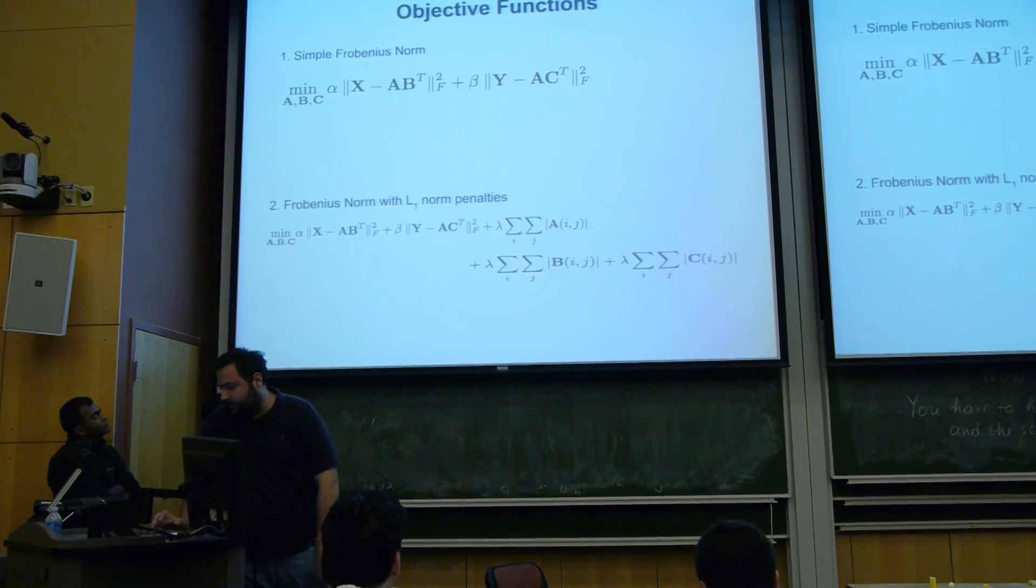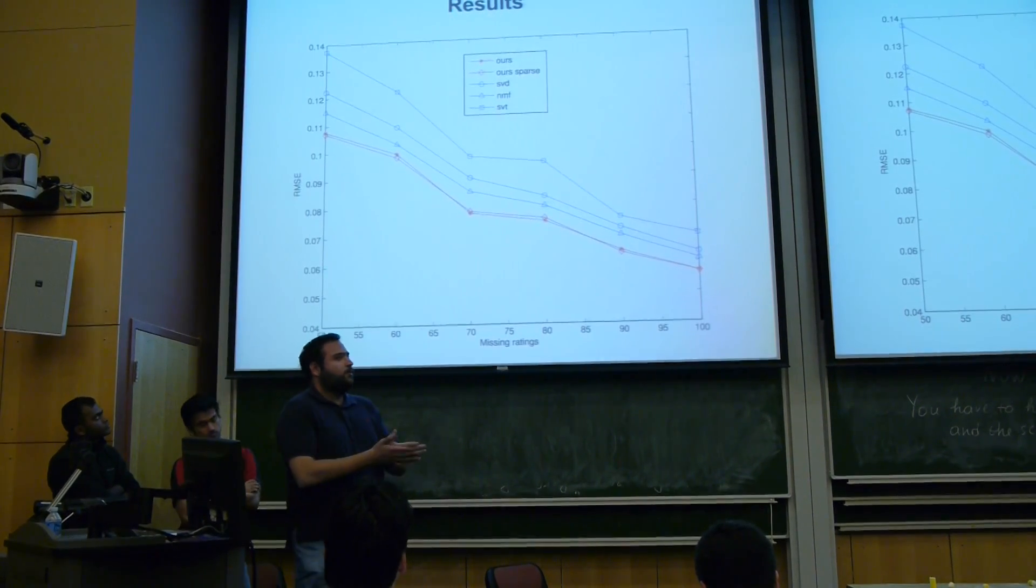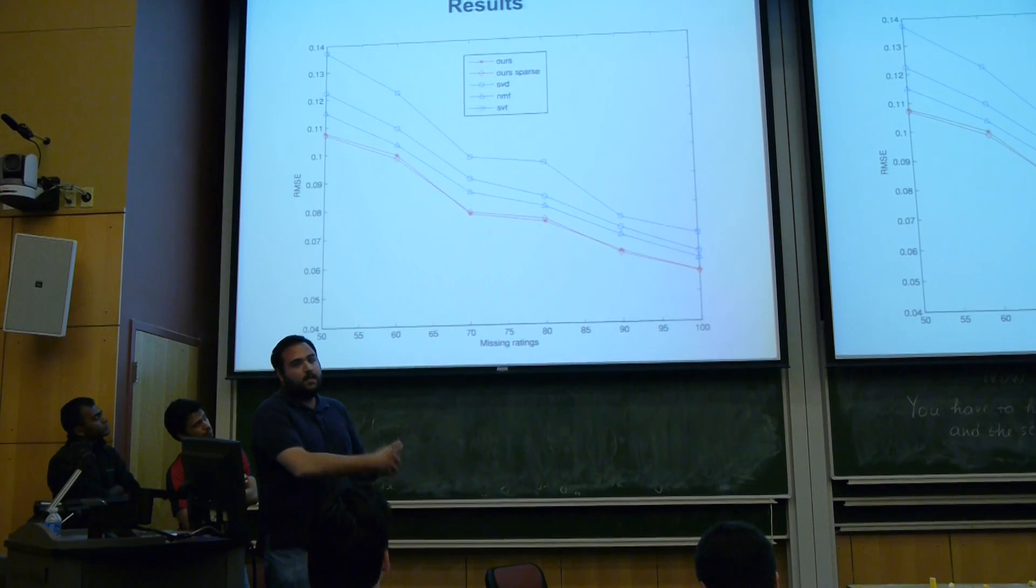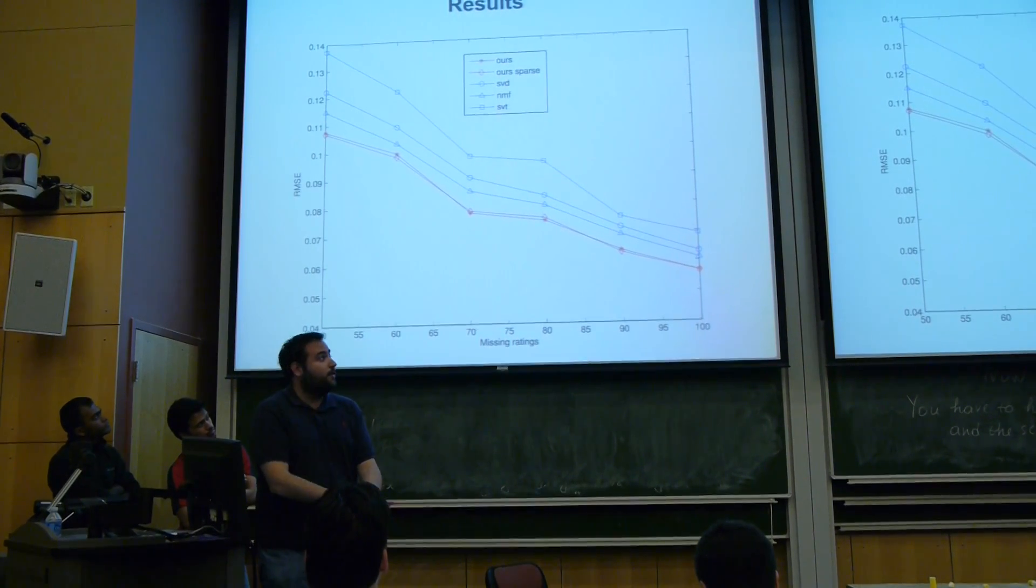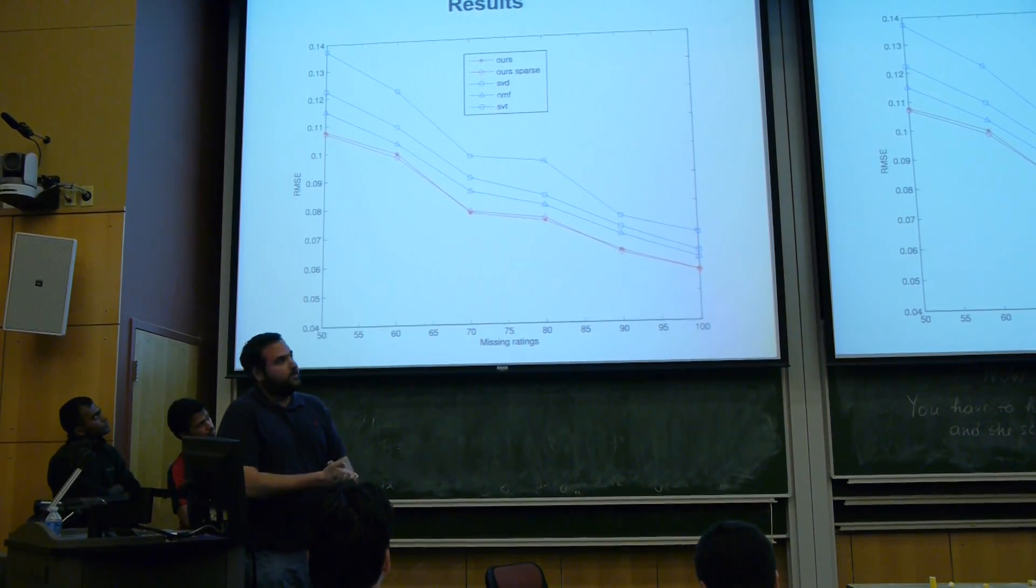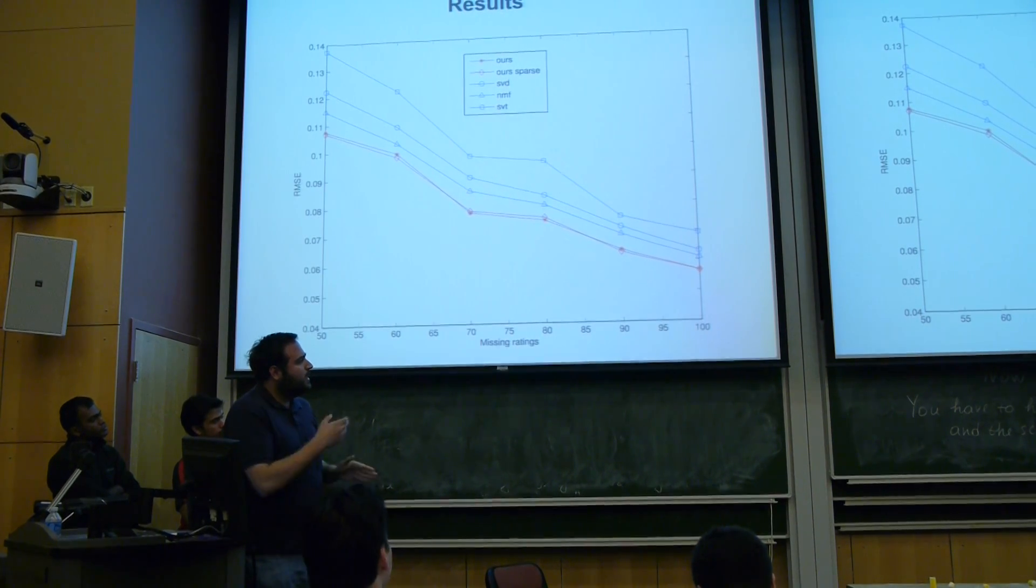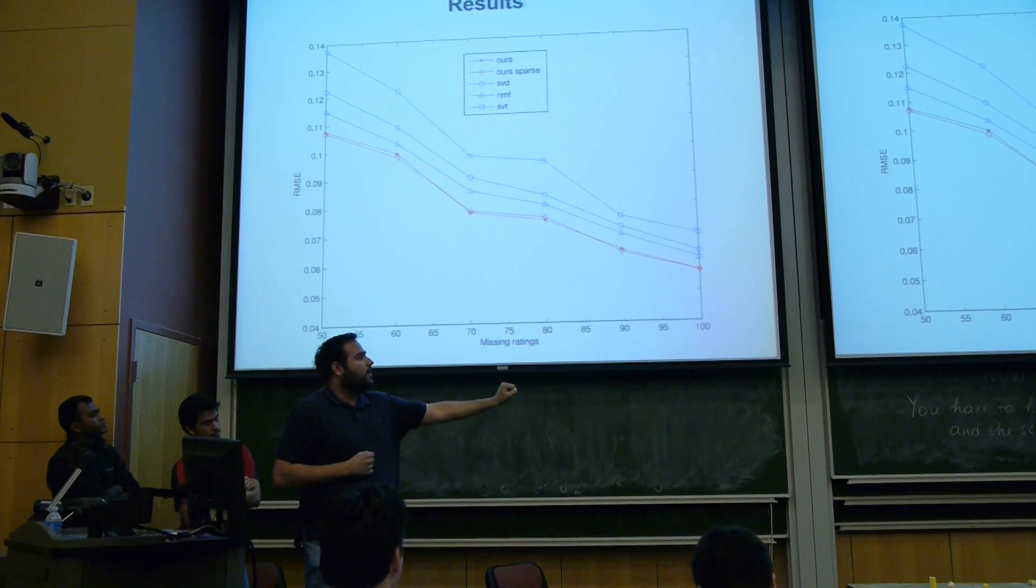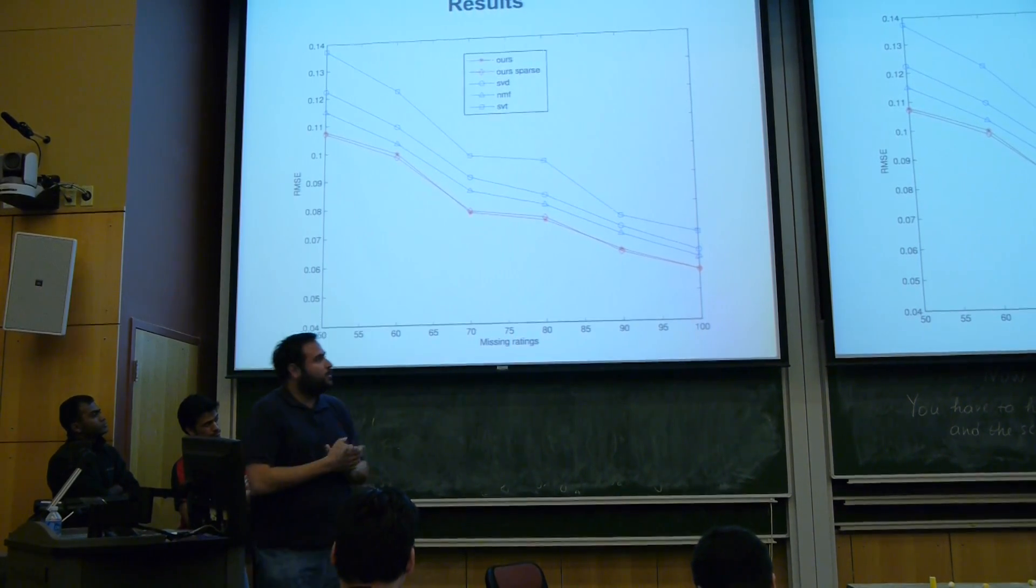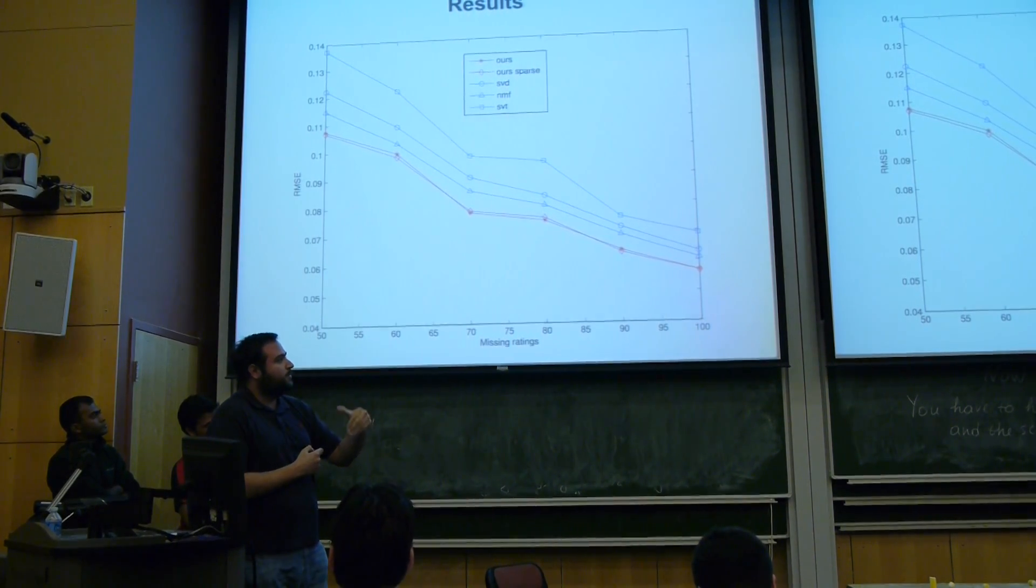And here's a snippet of our results. We use three baselines to compare against: SVD, non-negative matrix factorization, and singular value thresholding, which is a specialized matrix completion algorithm. And red stuff is our two methods. The vertical axis is the RMSE of the missing values, and the horizontal axis is the number of missing ratings that we want to predict. And this is for Netflix and IMDB using genres and ratings as features.